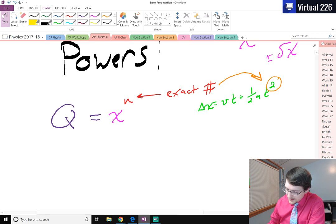So if it's an exact number, that's how we get q. It's just your measurement raised to the n, whatever that is, boom, you're done.